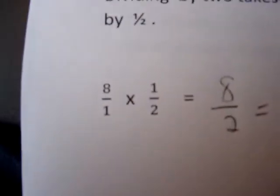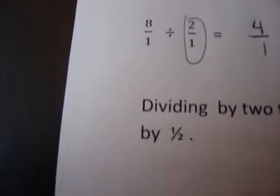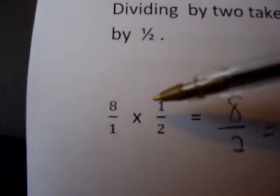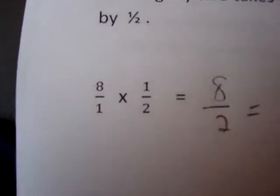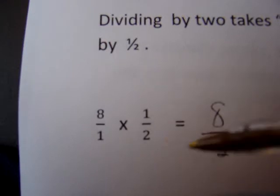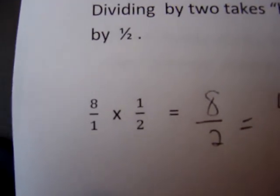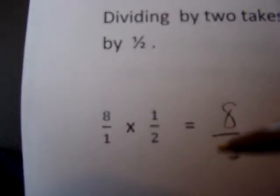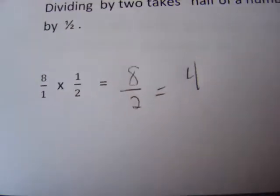We represented 2 as 2 over 1, and down here we went from division, switched to multiplication, and instead of dividing by 2, we multiplied by 1 half. Basically the 2 over 1 got flipped to 1 over 2, and we switched from divide to multiply and we get the same thing. Dividing by 2 is the same as multiplying by 1 half.